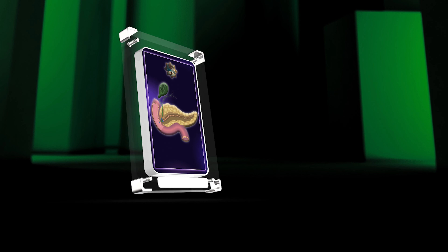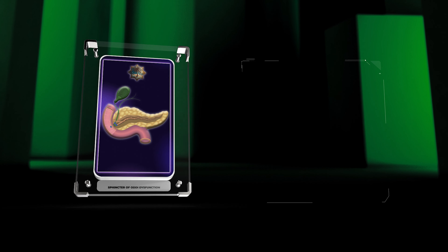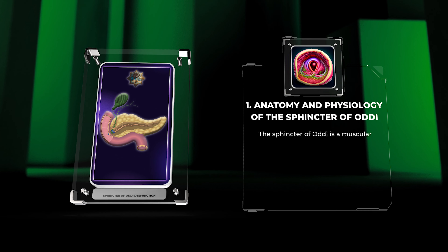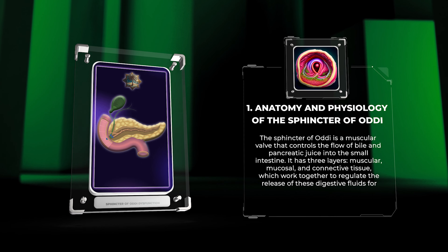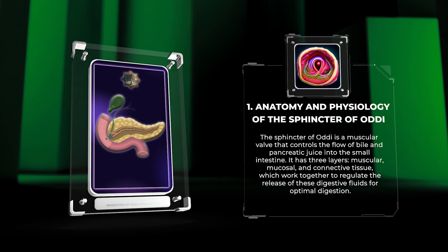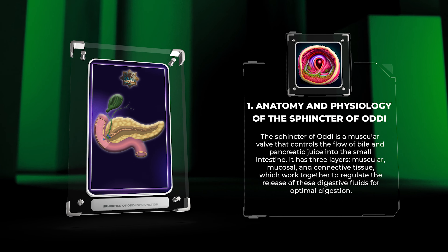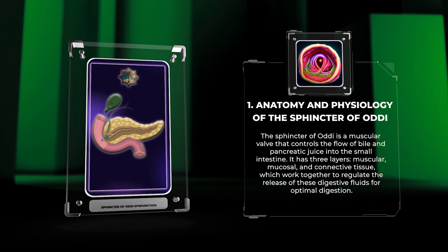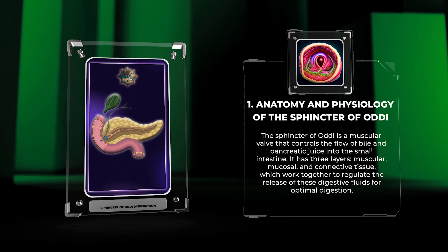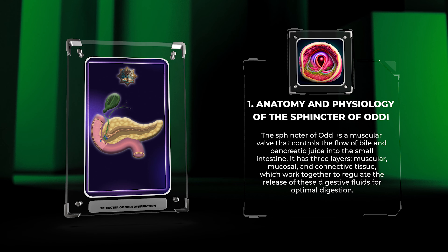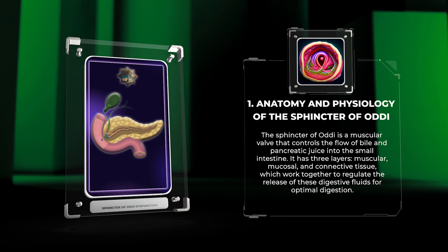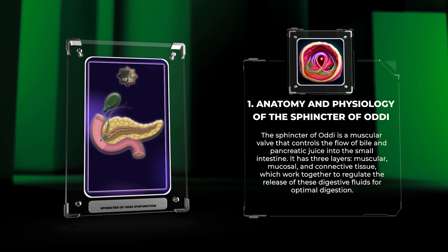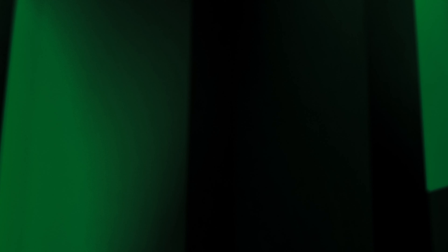The sphincter of Oddi is a muscular valve that controls the flow of bile and pancreatic juice into the small intestine. It has three layers — muscular, mucosal, and connective tissue — which work together to regulate the release of these digestive fluids for optimal digestion.